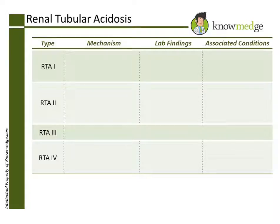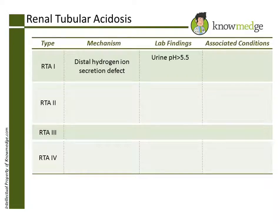In RTA type 1, a distal tubule defect prevents acid from being secreted. As the acid remains inside the body, the urine pH will rise, usually to a level greater than 5.5.